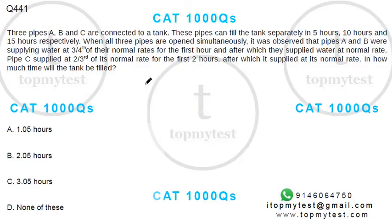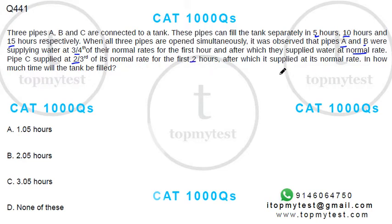This is a question from IFT on pipes and cisterns. Three pipes A, B, C connected to a tank can fill it separately in 5, 10, and 15 hours respectively. When all three pipes are open simultaneously, pipes A and B supply at three-fourths of the normal rate for the first hour, then at normal rate. Pipe C supplies at two-thirds of the normal rate for the first two hours, then at normal rate.